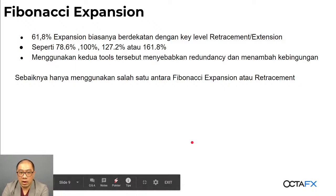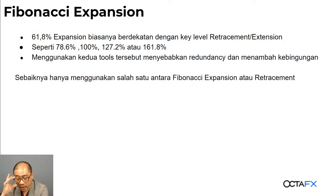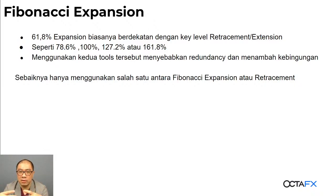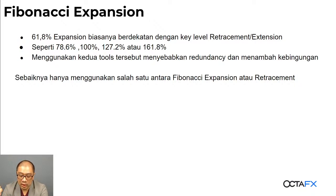Tadi udah saya lihat bahwa 61.8% expansion itu biasanya dekat banget sama key level retracement atau extension-nya, seperti 78.6, 100, 127.2, dan 161.8. Jadi kalau kalian menggunakan dua tools tersebut berbarengan, redundant banget. Kecuali kita mau pastikan adanya penutupan di atas atau melewati 23.6% retracement itu oke. Tapi kalau misalnya digabungin terus digunakan buat jadiin target, nanti bingung, soalnya bedanya tipis-tipis. Jadi pilih salah satu aja — yang jelas retracement sama extension pasti akan lebih kecil range-nya daripada expansion karena hanya menggunakan dua titik.